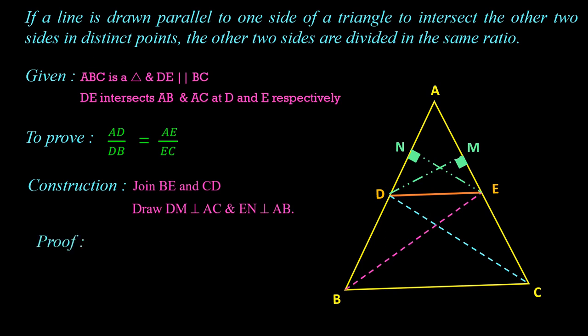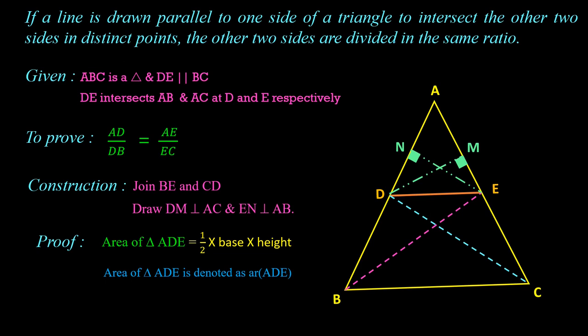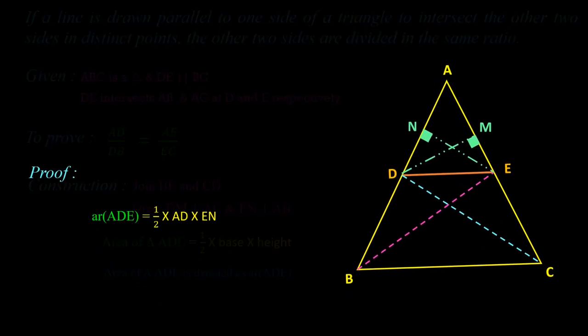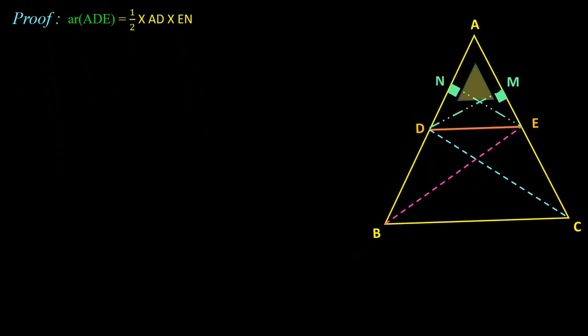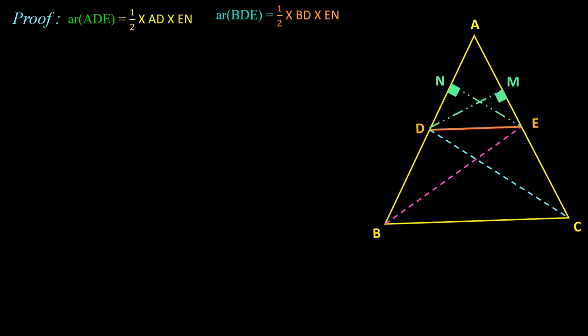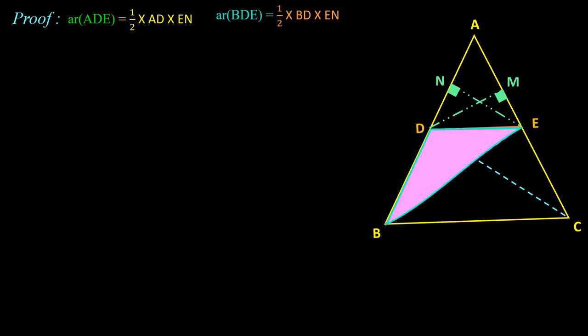Let us start the proof by comparing triangle ADE with triangle BDE. We know area of a triangle is ½ × base × height. For triangle ADE with base AD, the perpendicular is EN, so area of triangle ADE = ½ × AD × EN. For triangle BDE with base BD, the perpendicular is also EN, so area of triangle BDE = ½ × BD × EN.